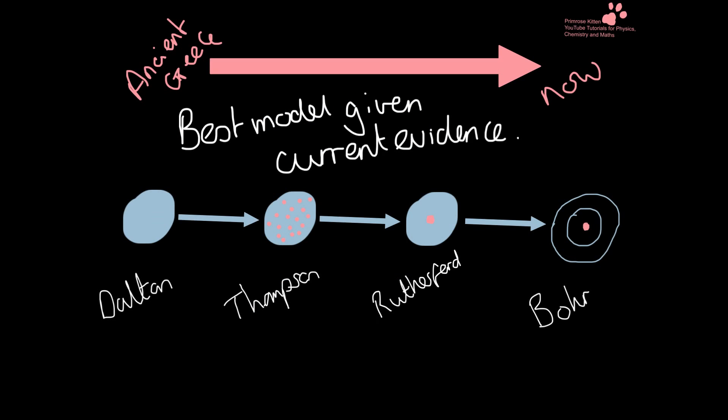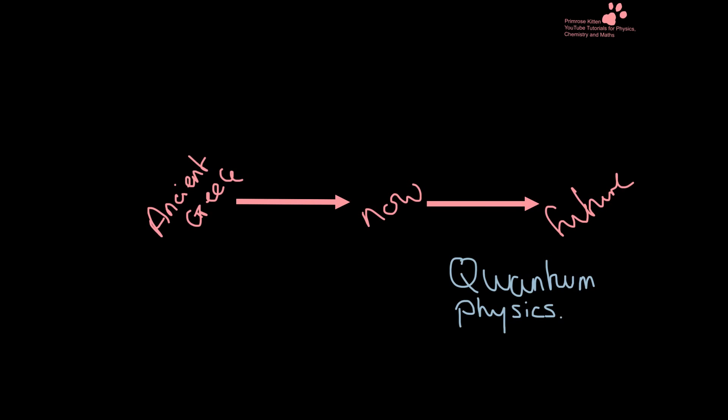So we've moved through a number of models — from Dalton to Thomson to Rutherford to Bohr, and then onto the quantum model. Each model was the best fit given the current evidence. Bohr's model is the one we generally accept today based on the best current evidence. The future is all quantum physics — and for A-level chemistry or even a chemistry degree, you don't have to know quantum physics, but it will be delving deeper and deeper into the nature of the atom.